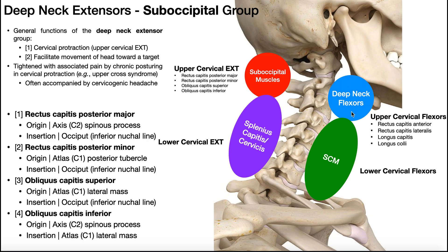On the anterior upper cervical spine we have the deep neck flexors, and on the posterior upper cervical spine we have the suboccipital group — the deep neck extensors. Word to the wise: if you ask somebody to look up at the ceiling and go into cervical extension, the vast majority of that movement is provided by the upper traps and the splenius muscles. There's very little provided by the suboccipital muscles because they are postural muscles — not designed to exert a large amount of force or gross movement, but really just fine-tuning upper cervical extension and holding you in that posture. They're not commonly muscles you'd need to strengthen.